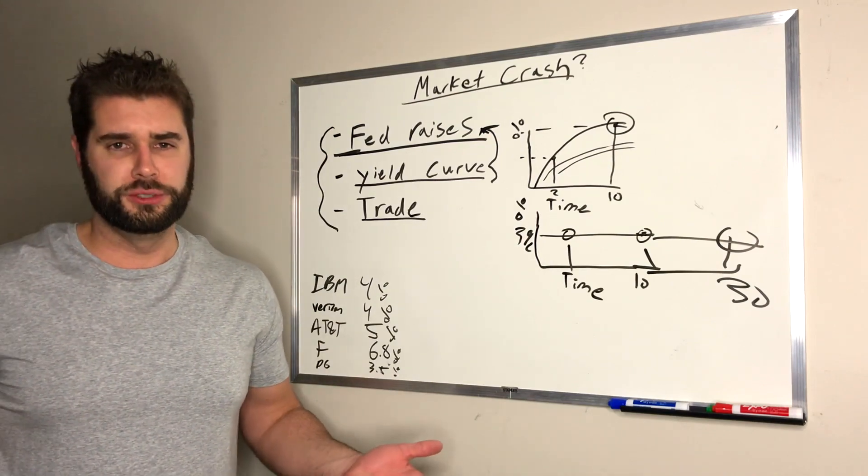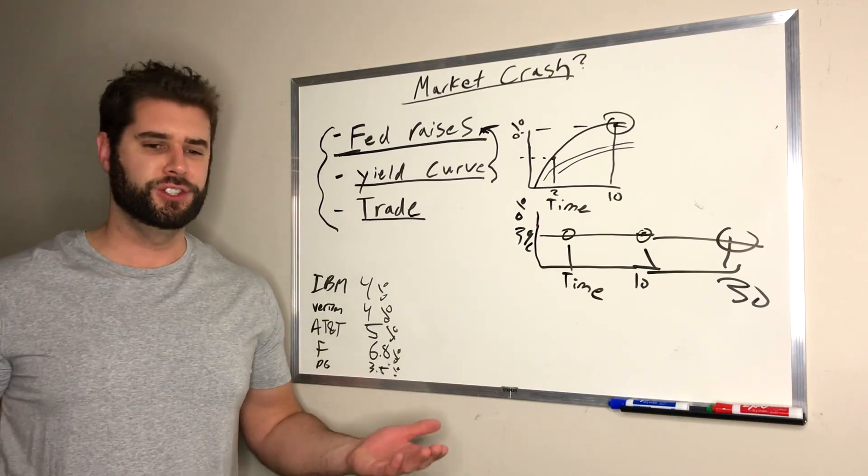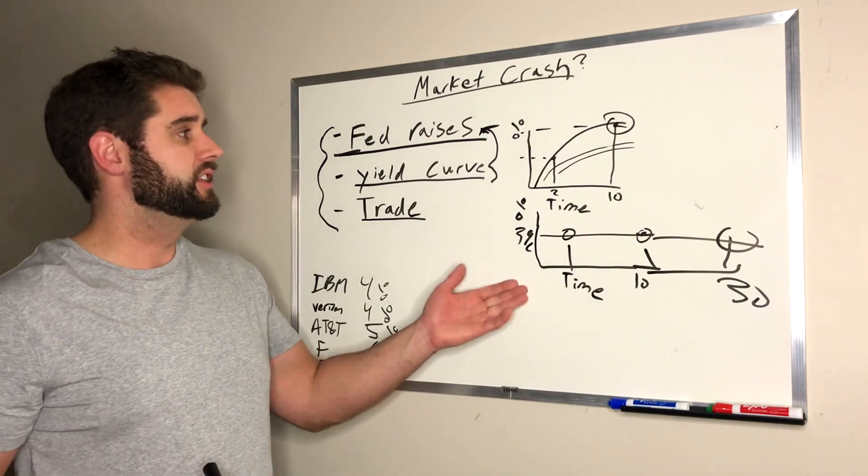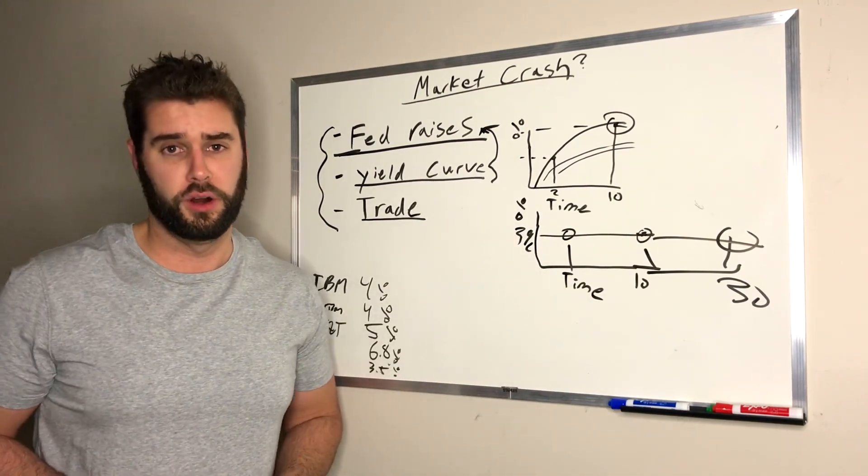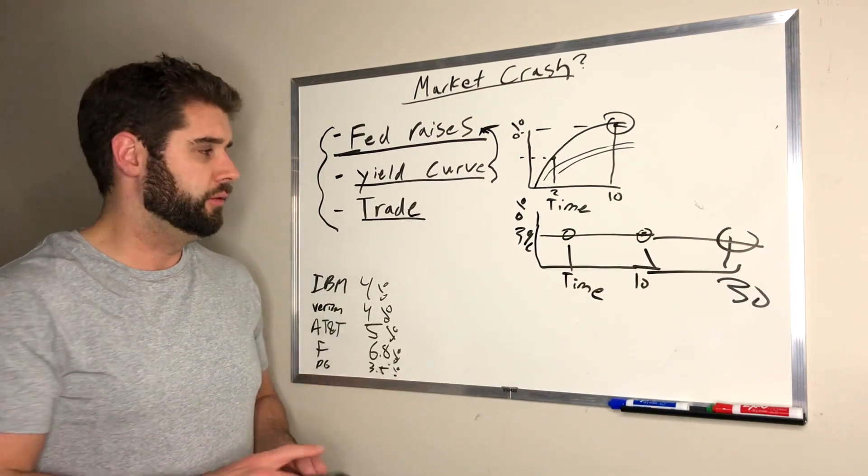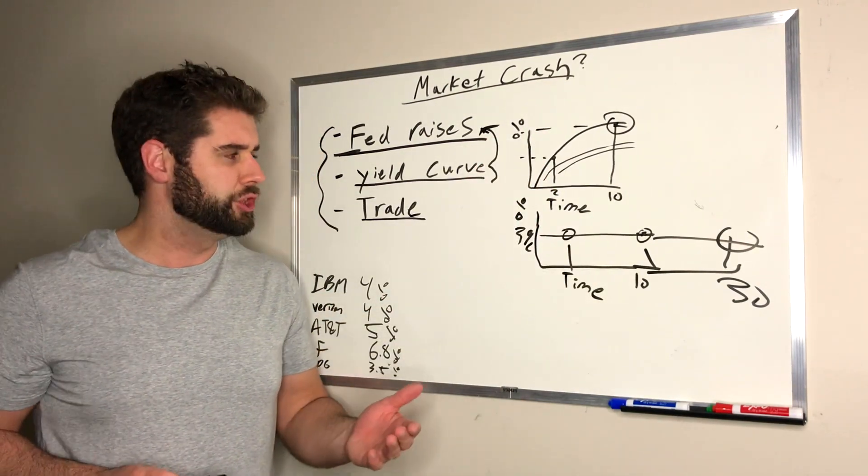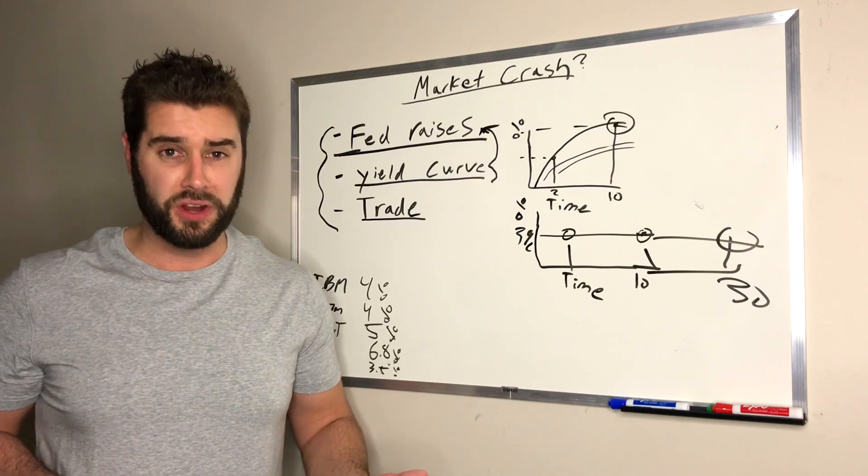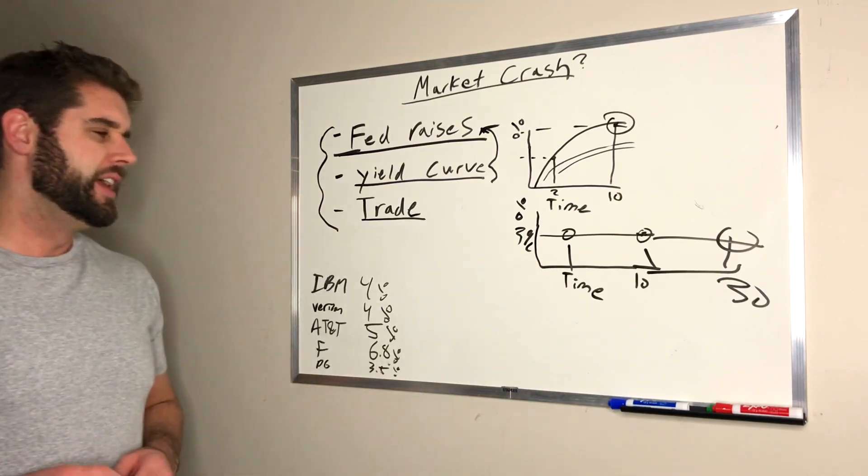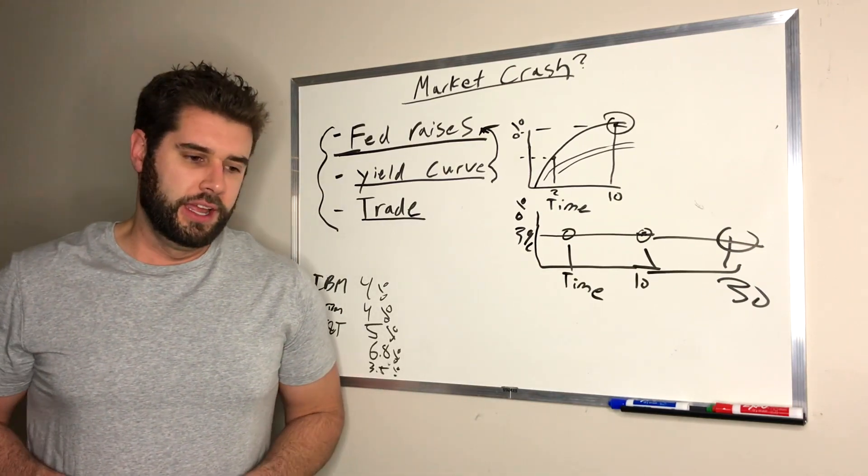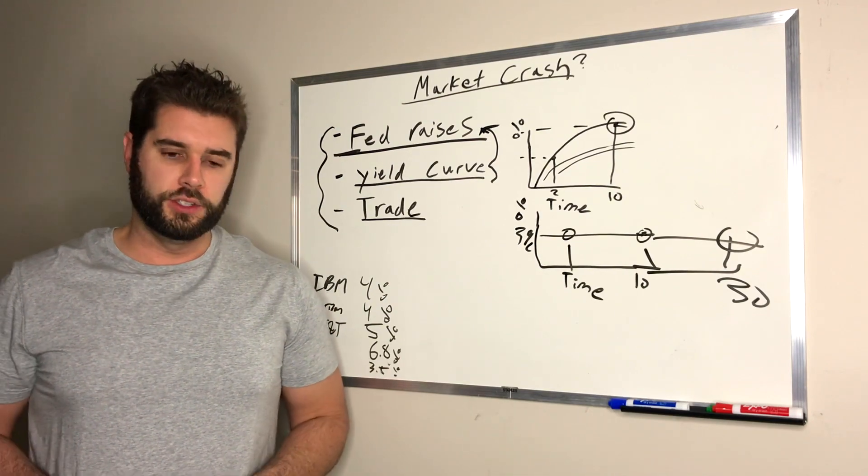But there's a couple of different options. One of the options is to try to time the market. This is generally speaking, not a good idea. You get out. People were looking at this yield curve flattening a long time ago and might have got out of the market. Look at the opportunity cost. Look how much they have actually given up in terms of the market, just on a tear, right?